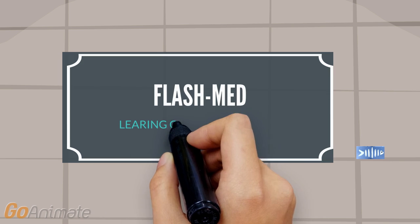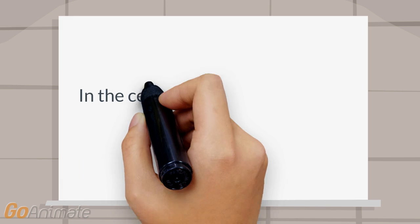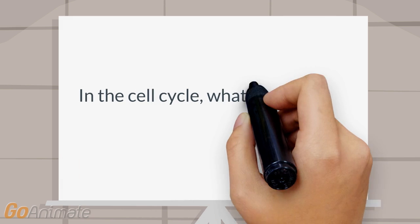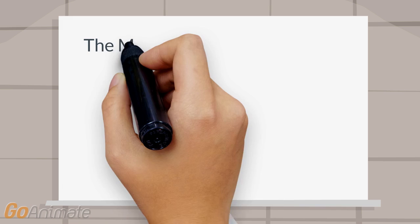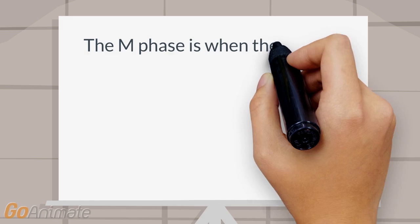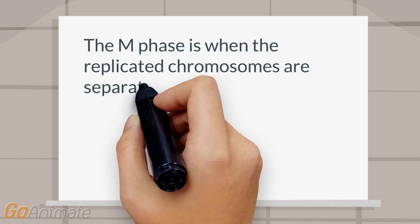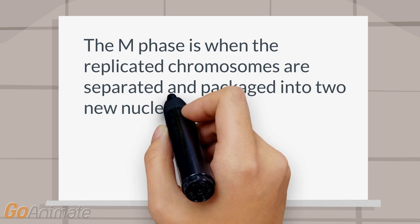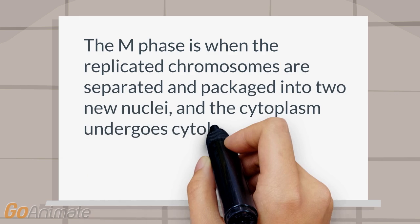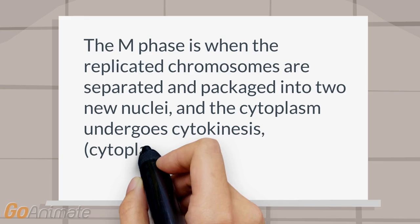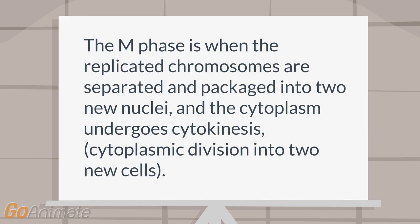In the cell cycle, what occurs in the M phase? The M phase is when the replicated chromosomes are separated and packaged into two new nuclei, and the cytoplasm undergoes cytokinesis — cytoplasmic division into two new cells.